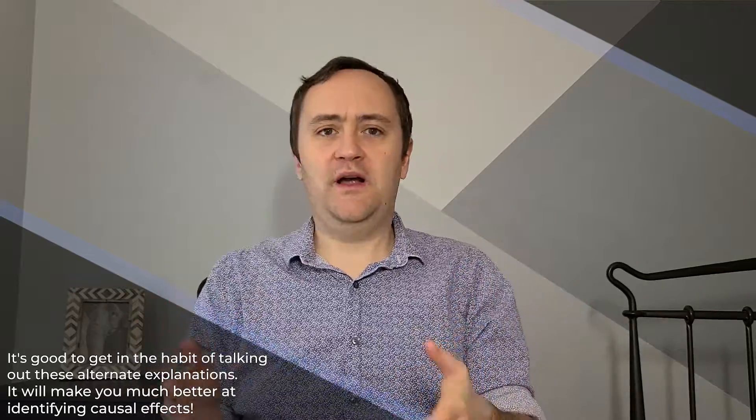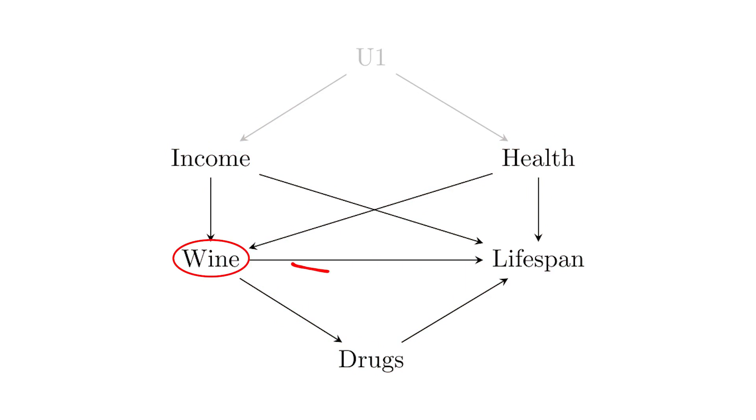We've got all these pathways we can walk, and there's a description in the chapter of how to find all of them. We can categorize them based on our research question. The first categorization is front and back doors. A front door path is any pathway where all the arrows point away from treatment and towards the outcome. On this diagram, wine to lifespan is a front door path, and wine to drugs to lifespan is also a front door — wine might affect lifespan because it makes you take more or fewer drugs. Back doors are any pathway where at least one arrow somewhere along the pathway is pointing back at the treatment. These are usually alternate reasons why the two variables are related.